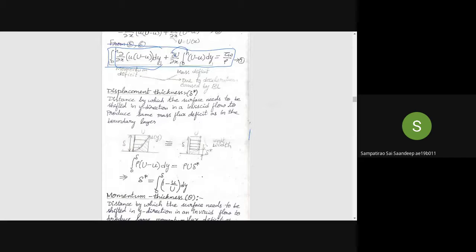So let us in a general sense discuss more about those two terms. One is the displacement thickness. Displacement thickness is the distance by which the surface needs to be shifted in y direction in an inviscid flow to produce the same mass flux deficit as in the boundary layer. The boundary layer thickness is delta here, and the flow has some distribution like this.